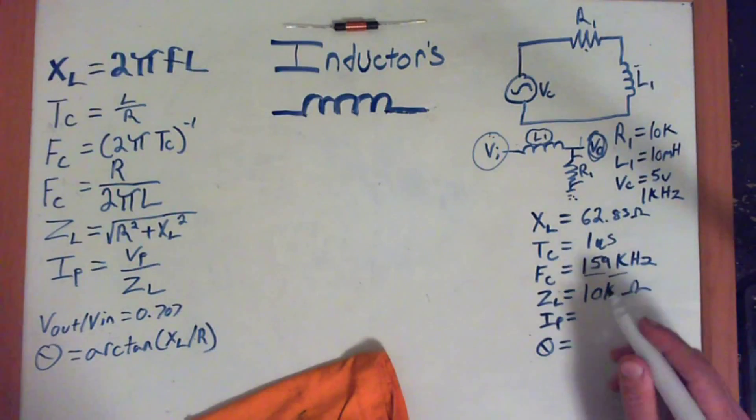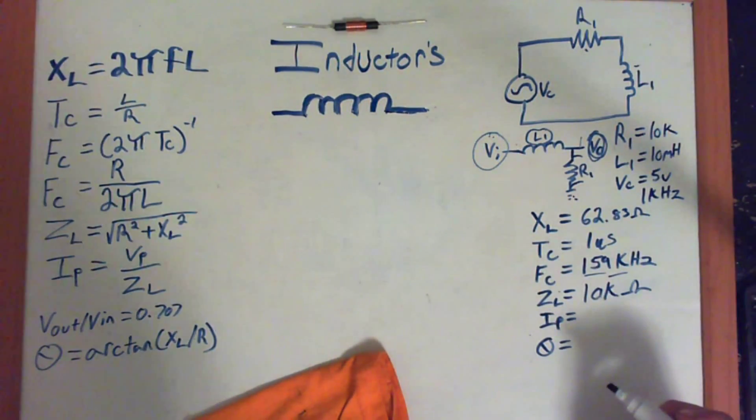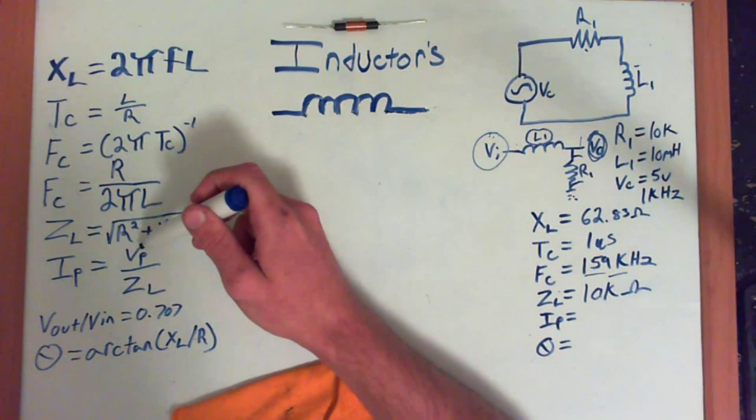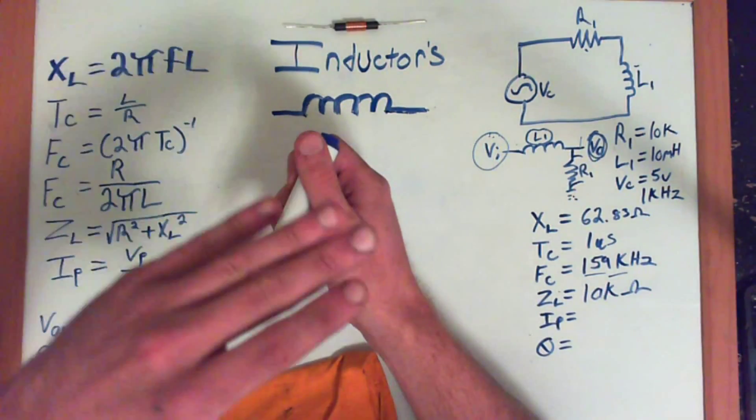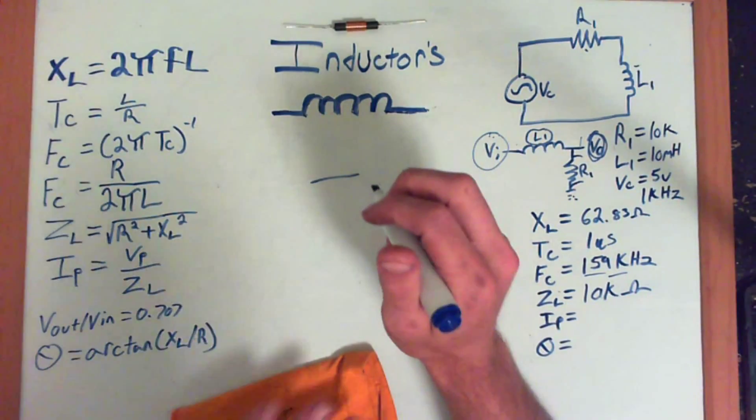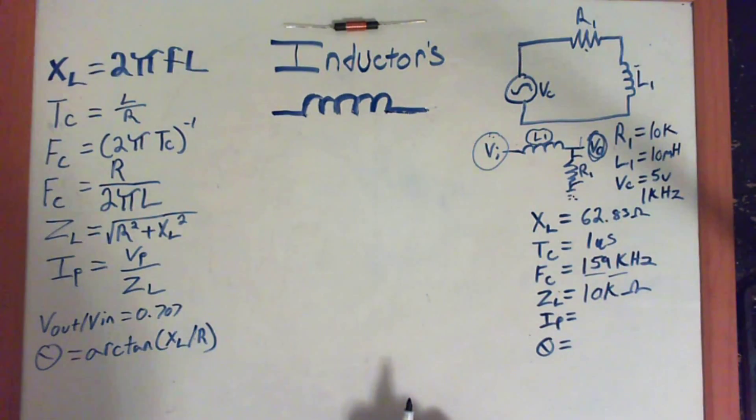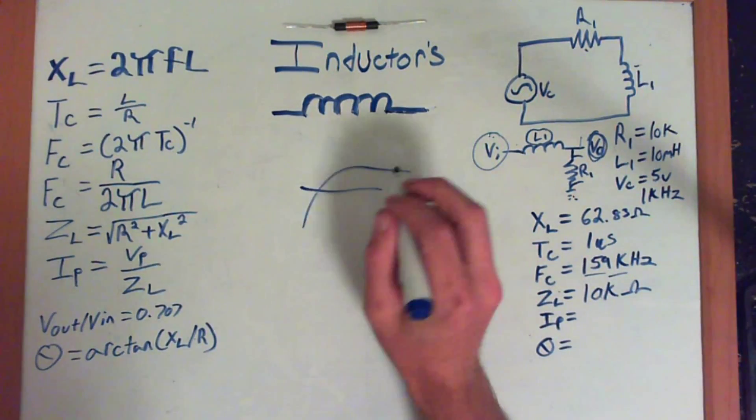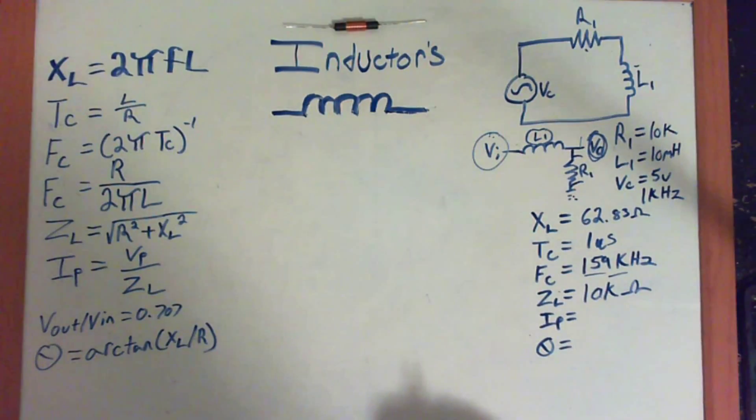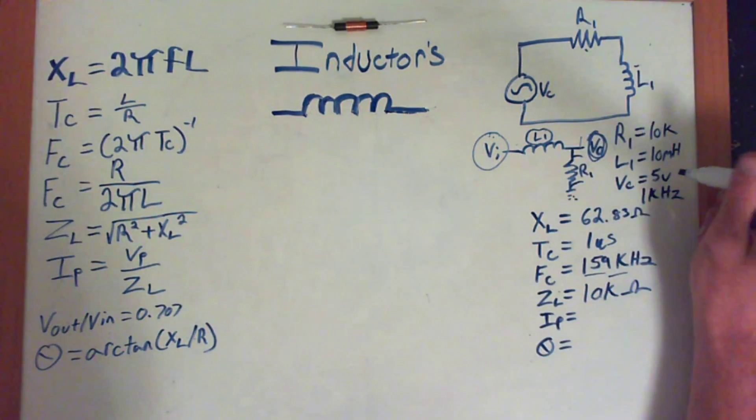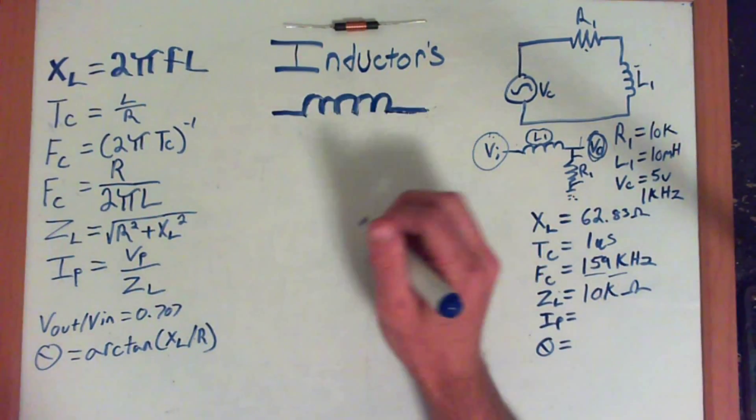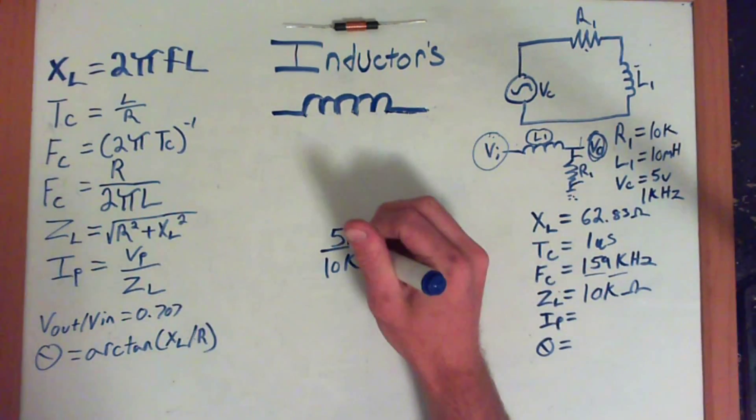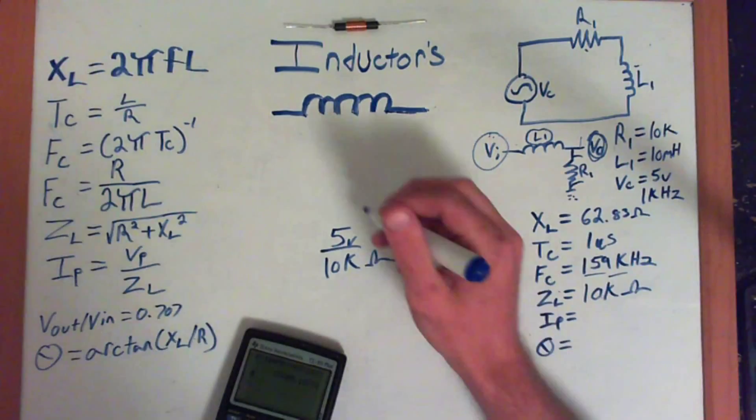Okay, so now that we know those values, we can calculate the peak current in the circuit, which is IP, which stands for peak current, which equals the voltage peak, because it's AC, it's alternating up and down. So, you do have a peak voltage, and there is a point which is called the RMS voltage, which is a certain line in the waveform that determines where exactly is that peak voltage. And you need a true RMS meter to actually pick that up. But our RMS voltage is going to be 5 volts, just for simplicity.